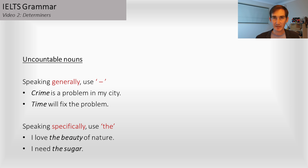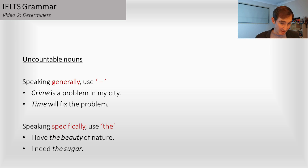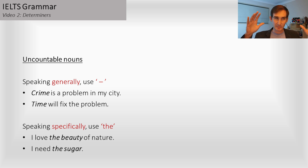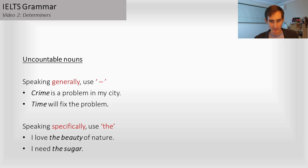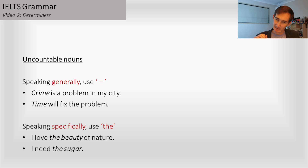Now for uncountable nouns: if you're speaking generally, use no article. For example, 'Crime is a problem in my city' — the uncountable idea of crime, no article. 'Time will fix the problem' — no article. But if I'm speaking specifically, even if it's uncountable, I will need the word 'the.' For example, 'I love the beauty of nature' — beauty is uncountable, but it's specific beauty. Or imagine we're eating and I say, 'I need the sugar' — we all know the sugar on the table. It's uncountable but it is specific, so we use 'the.'